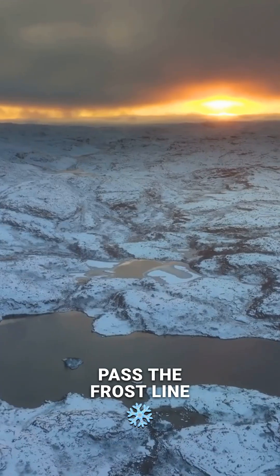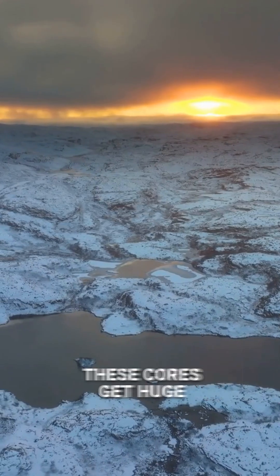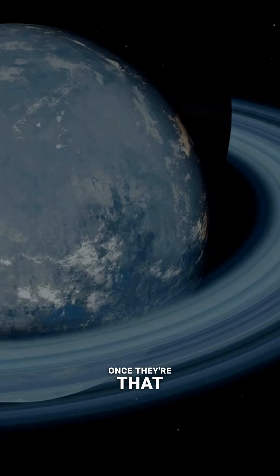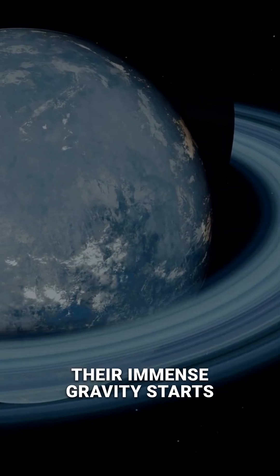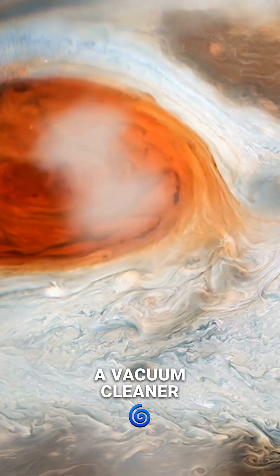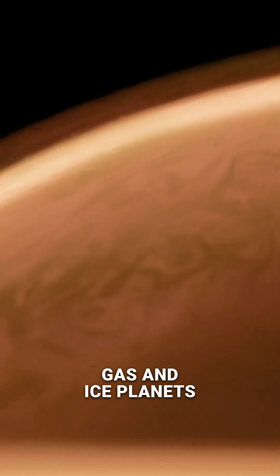Further out, past the frost line, there's tons of ice available. These cores get huge quickly, reaching 10 times the mass of Earth. Once they're that big, their immense gravity starts sucking up all the surrounding hydrogen and helium gas like a vacuum cleaner, creating the giant gas and ice planets.